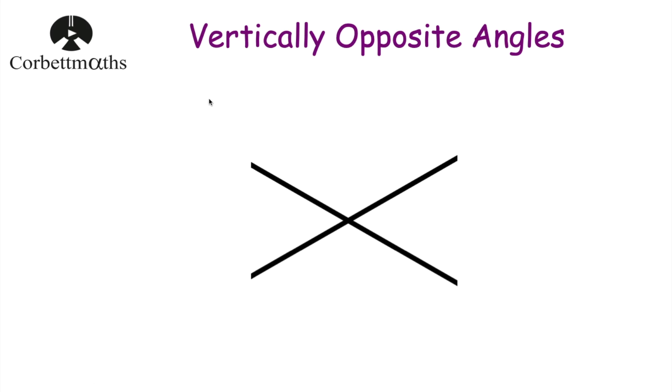Hi, welcome to ScorpioMath's video. In this video we're going to look at vertically opposite angles. Whenever we have two straight lines that cross each other, the opposite angles are always equal to each other.